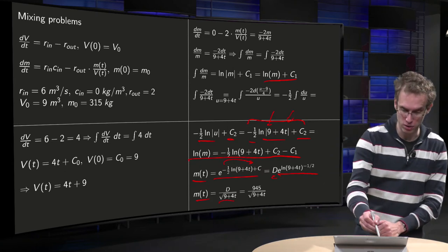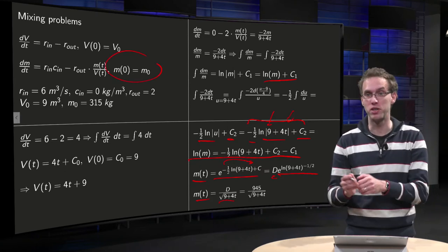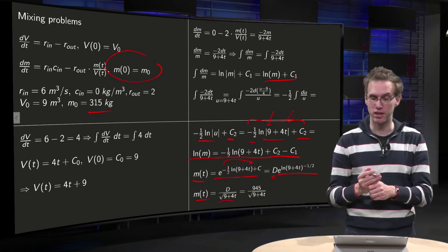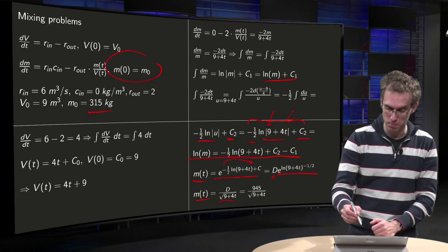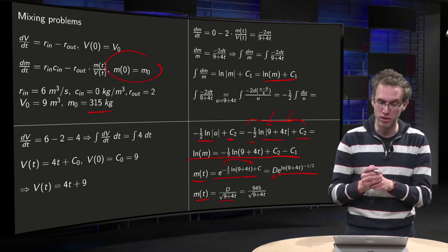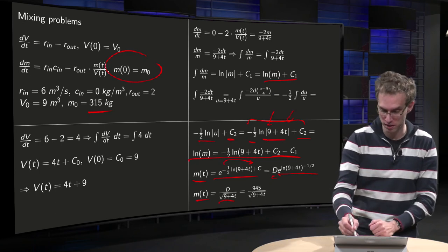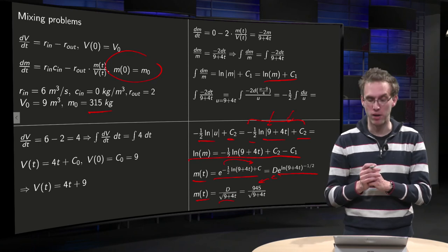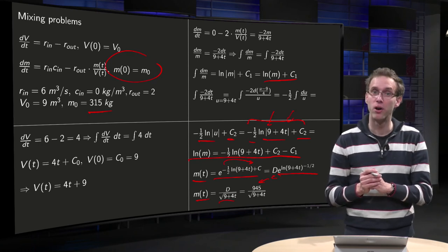So m of t just becomes d over square root of 9 plus 4t. You use your initial condition m of 0 equals m₀ equals 315 kilograms to get rid of d. By plugging in t equals 0, you get 315 equals d over 3, so d has to be 945.